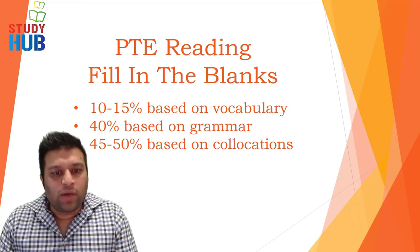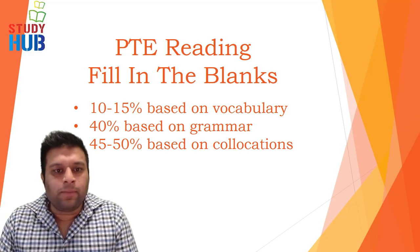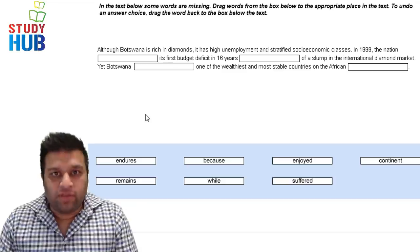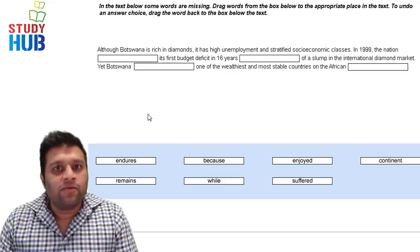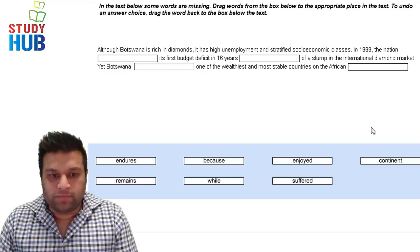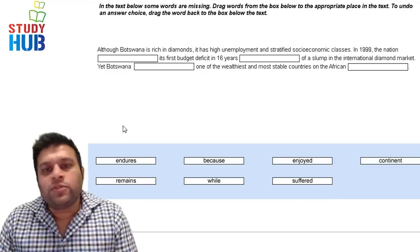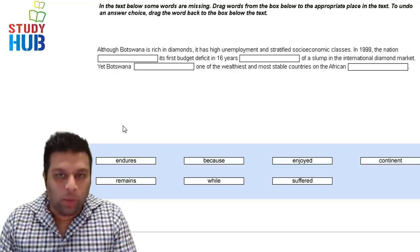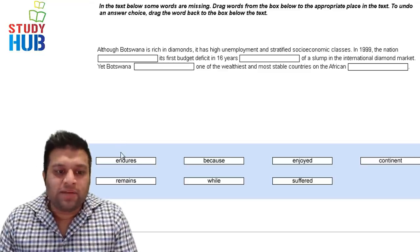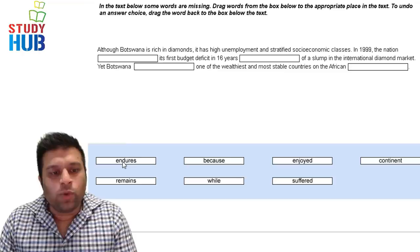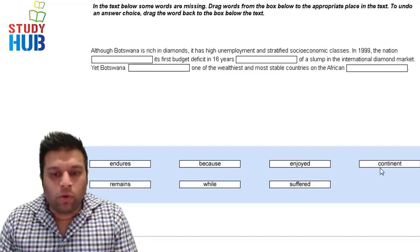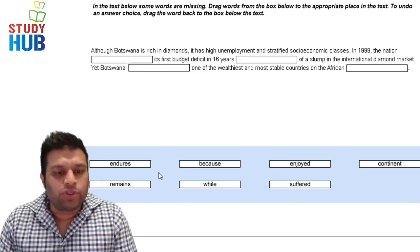Let's look at some examples from the official book and some outside it. There are three steps: first, read the options and note which meanings you know and which you don't. The words here are: endures, because, enjoyed, continent, remains, while, and suffered.